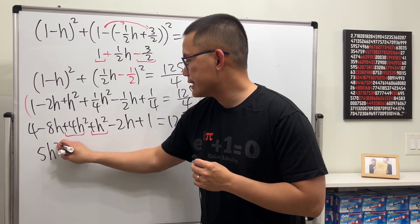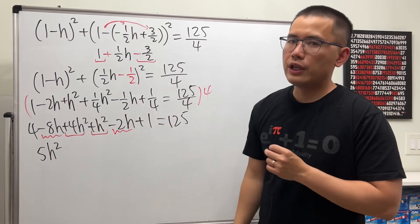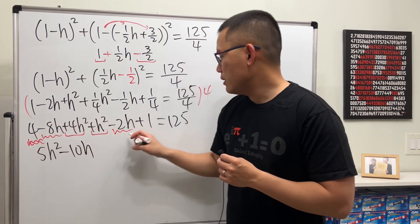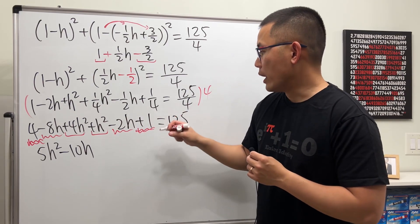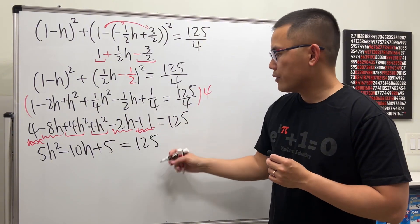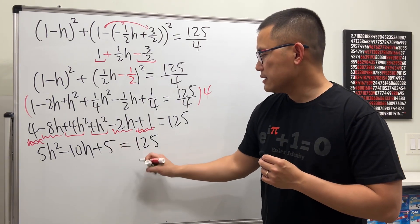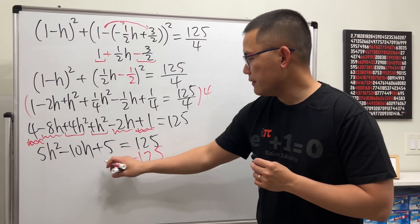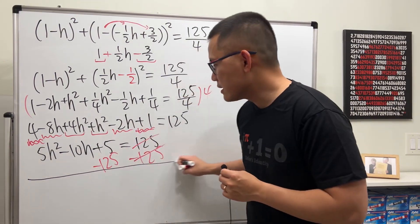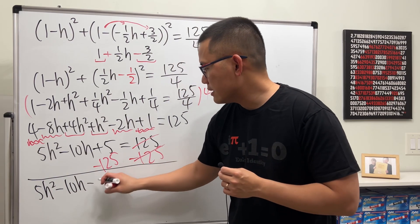Now combine terms: the h squared terms give 5h squared. Negative 8h minus 2h is minus 10h. Four plus one is plus 5, and that equals 125. We have a quadratic equation. Let's move 125 to the other side by subtracting 125, so we get 5h squared minus 10h.